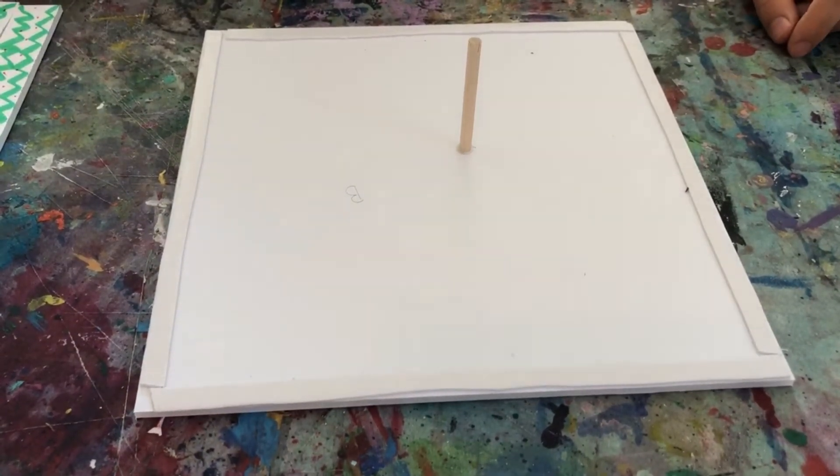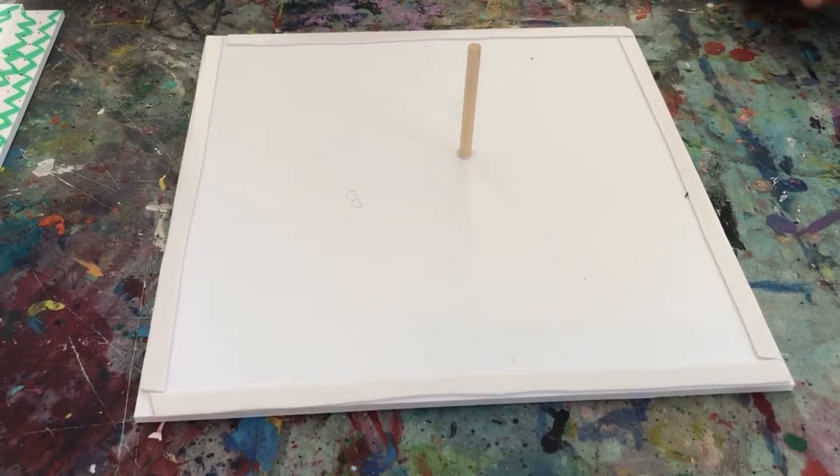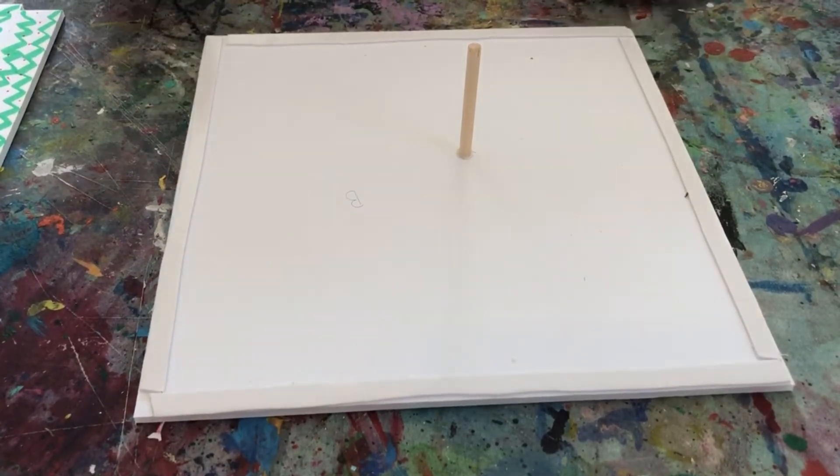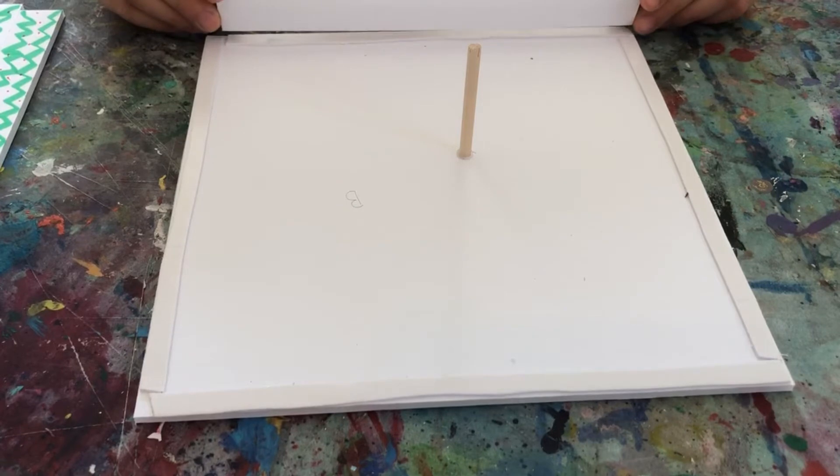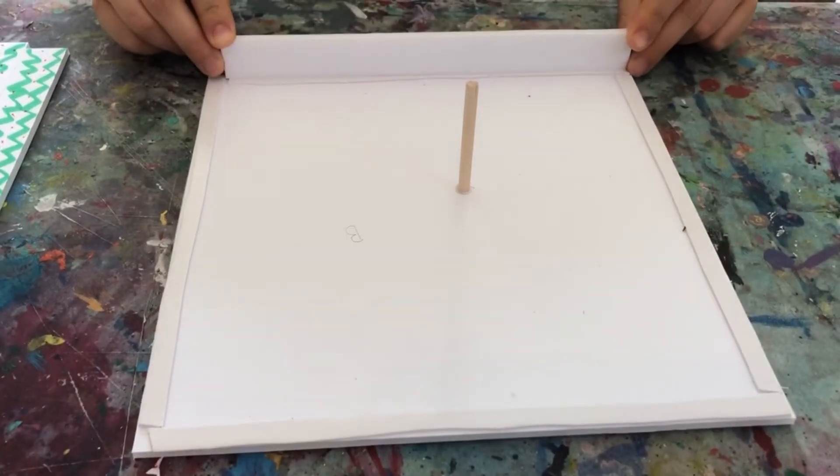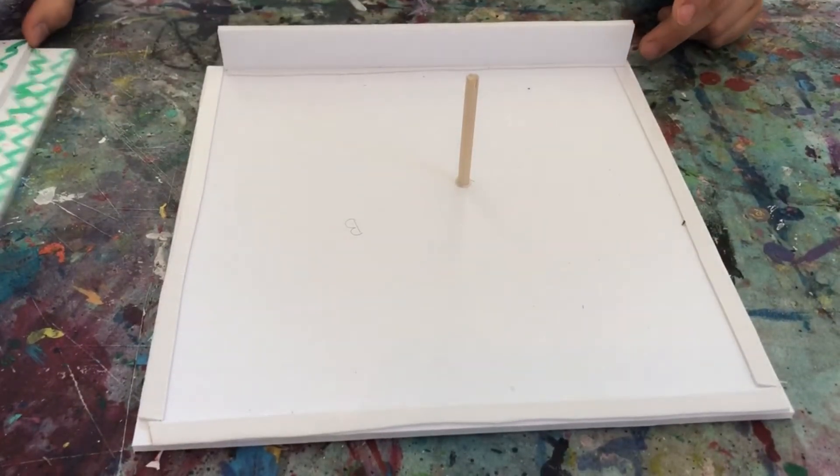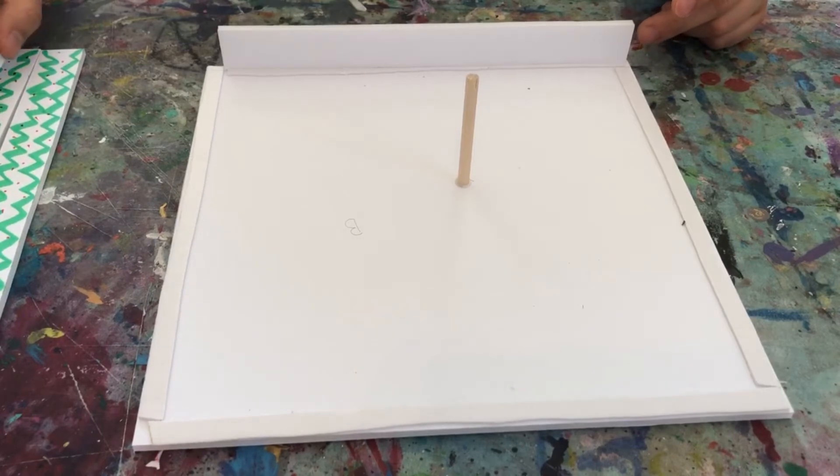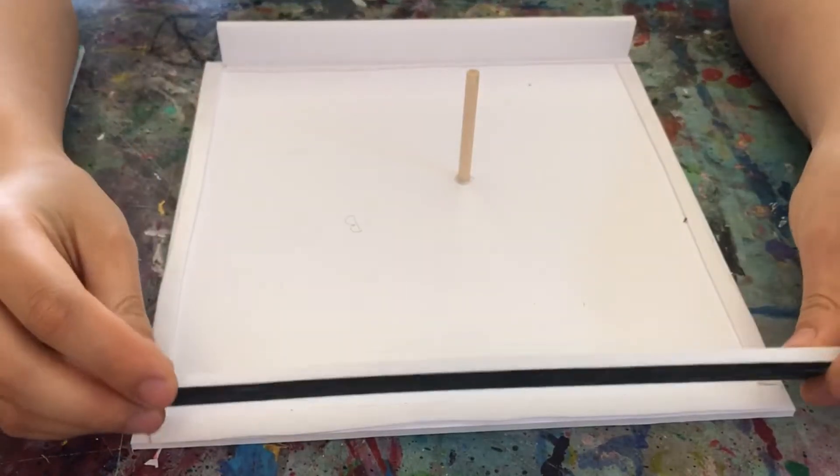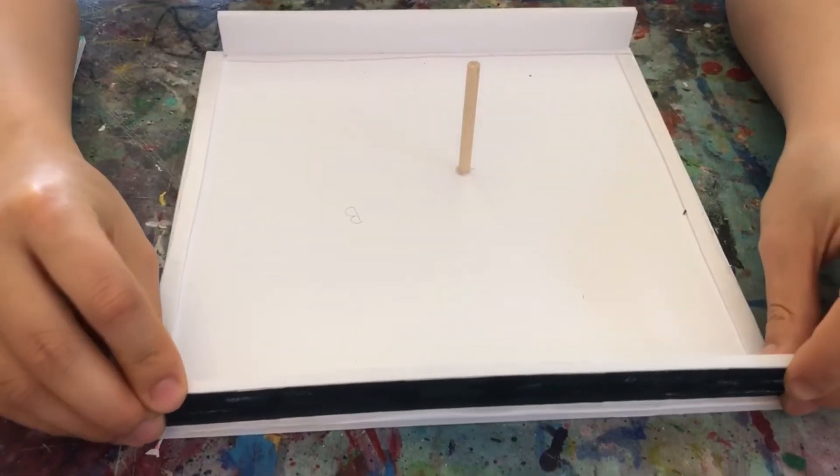Then you're going to attach one of the C pieces on one of the edges - it doesn't really matter which one, so you're just gonna gently press it in. Then you're gonna grab your other C piece and attach it on the opposite end.